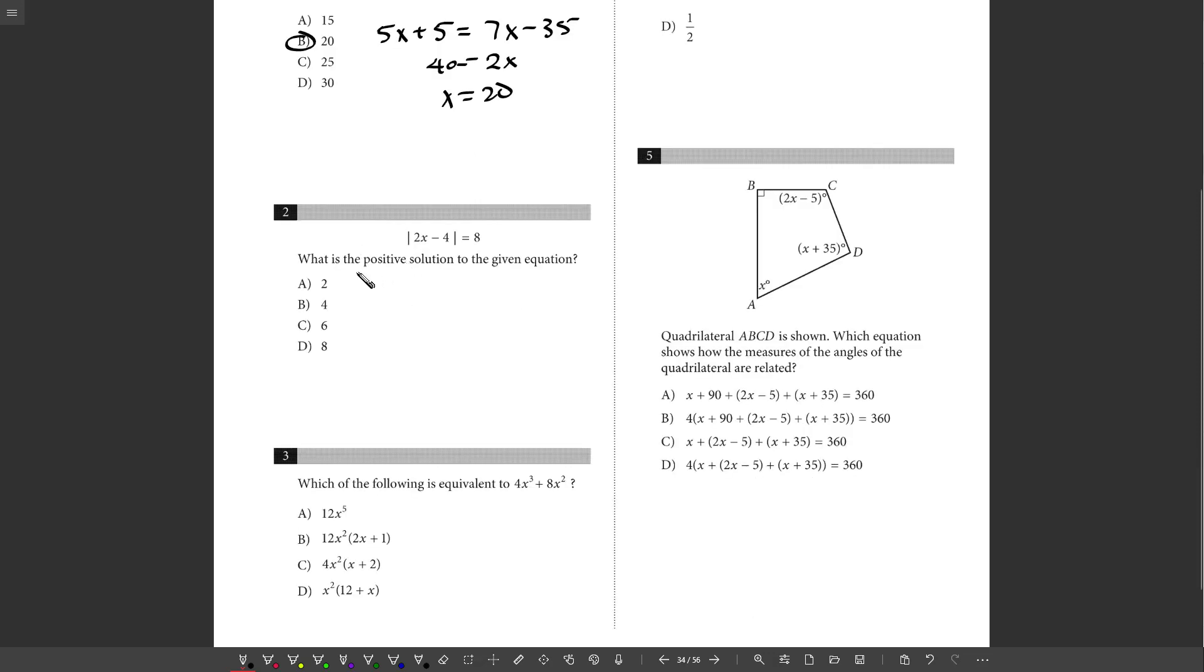Two, what is the positive solution? You could just plug these in and see which one works. If you wanted to solve this directly, remember you can split this into two scenarios. Either 2x minus 4 can equal positive 8, or 2x minus 4 can equal negative 8, because if that equals negative 8, when I take the absolute value, it turns into positive 8, which equals the 8 I want it to equal.